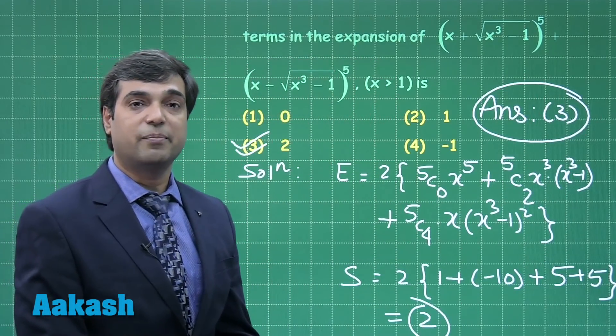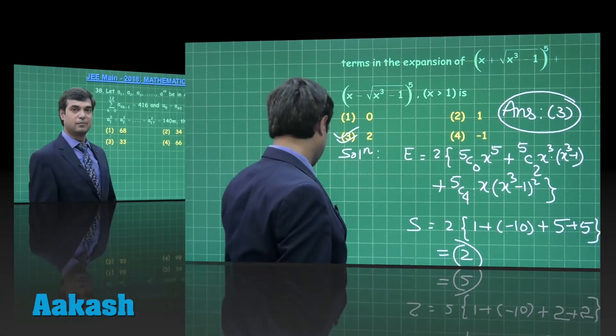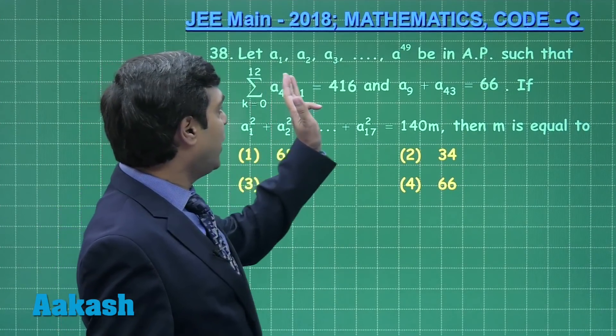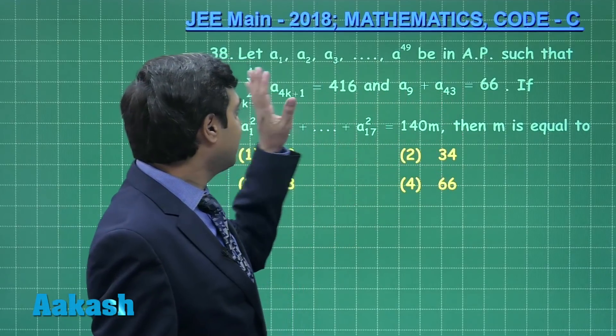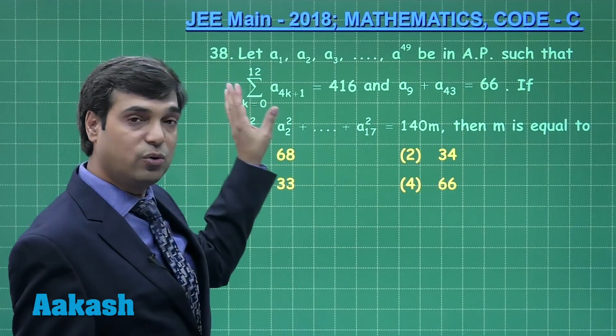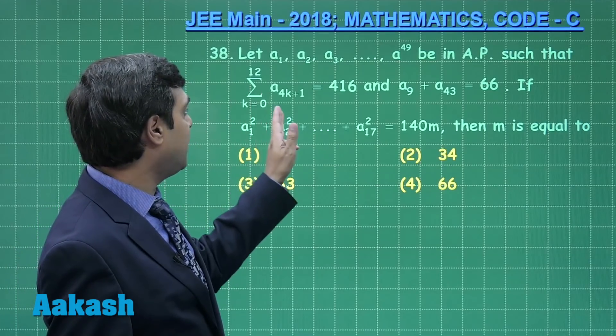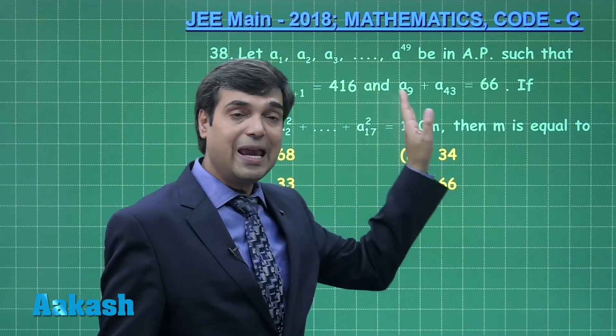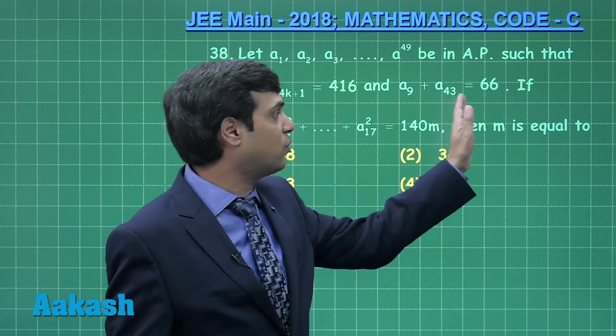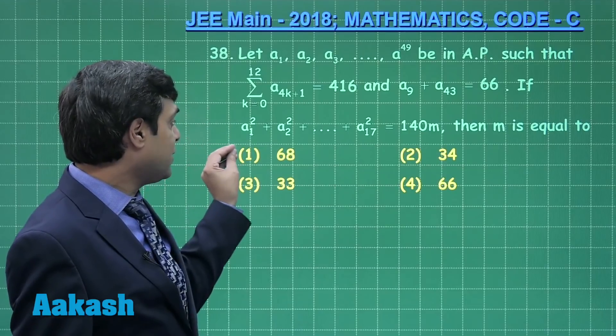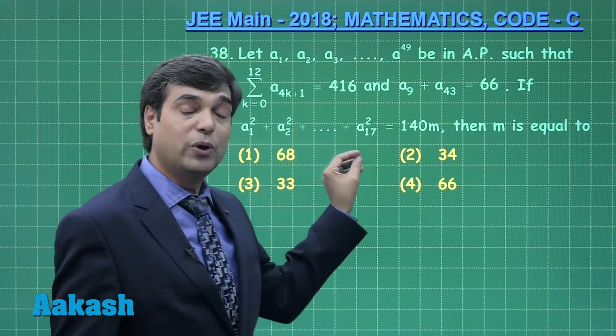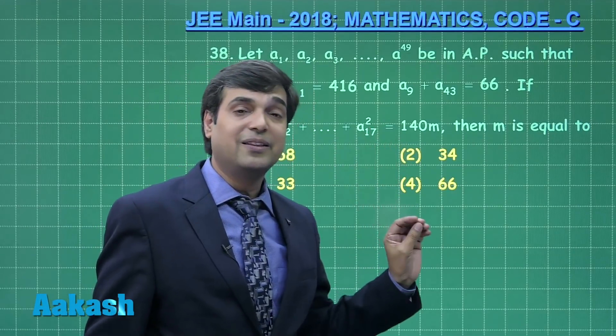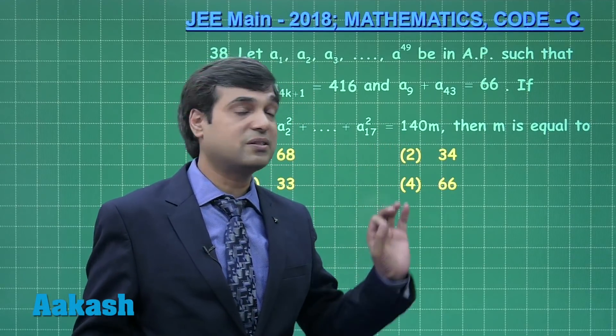Now move to the next one, that is question number 38. Let a₁, a₂, a₃, ..., aᵐ be in A.P. such that Σ(k=0 to 12) a₄ₖ₊₁ = 416 and another equation is given a₉ + a₄₃ = 66. If a₁² + a₂² + ... + a₁₇² = 140m, then we have to find the value of this term m.